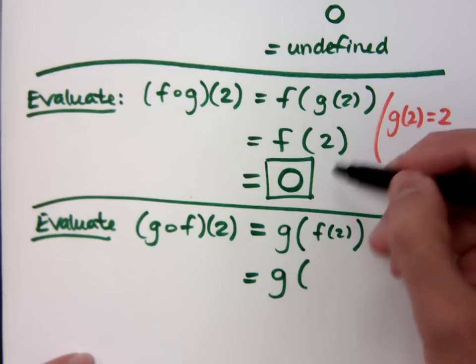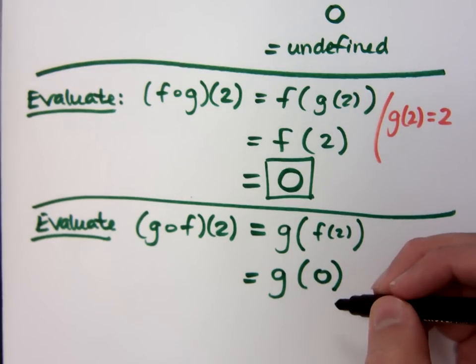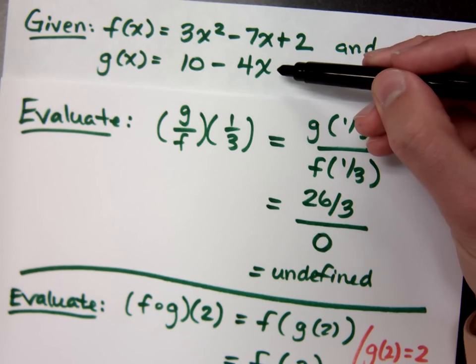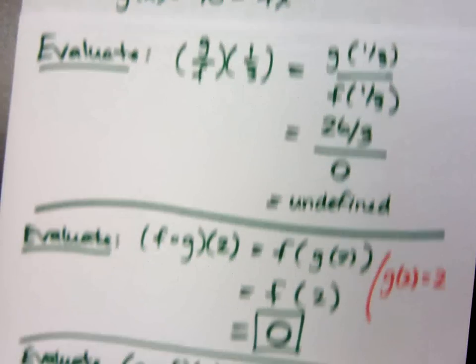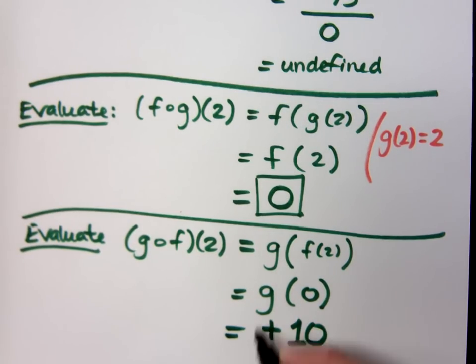So we can remember what we've already done. So f of 2, we found up here, was 0. And then g of 0, if you remember your g, let's come back up here. g is 10 minus 4x. If I plug in 0 for x, I get... Is that positive? Positive 10. I get positive 10.